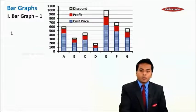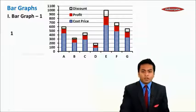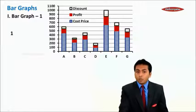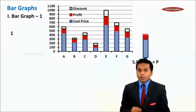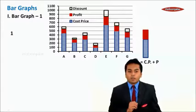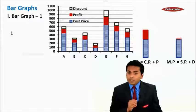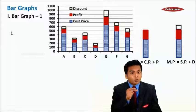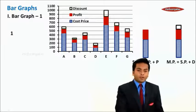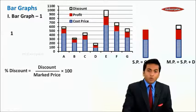Before actually solving this, let us just revise what is selling price, what is market price, and what is cost price. My selling price is nothing but cost price plus profit, which means it is the blue color bar plus the red color bar. And my market price is nothing but selling price plus discount, which means it is blue color plus red color plus the white color bar.